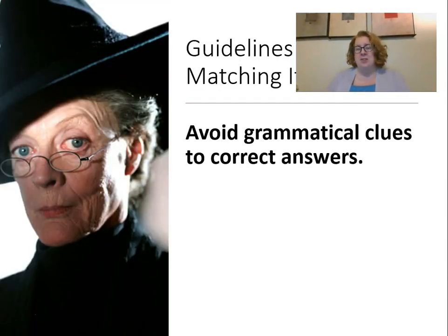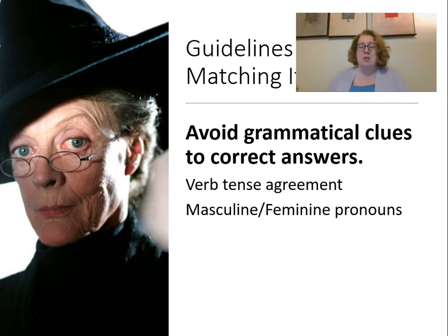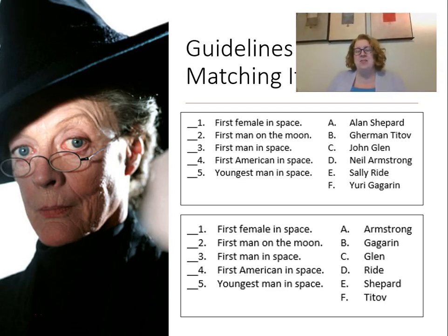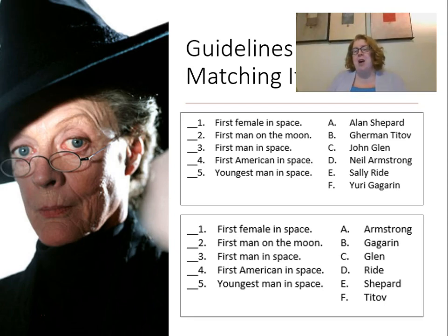Avoid grammatical clues to the correct answer — things like verb tense agreement, masculine and feminine pronouns, and 'a' versus 'an.' In this example, if one premise is 'the first female in space' and there's only one female name in the responses, it's pretty obvious which answer is correct. In the second example, I left off their first names to raise the difficulty just a little bit. You might also add more female names to the list. Just be sure you're not inadvertently giving students clues to the correct answers.